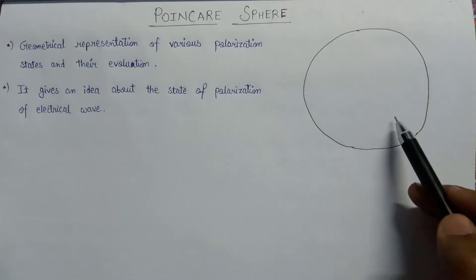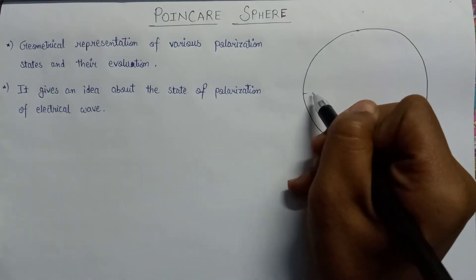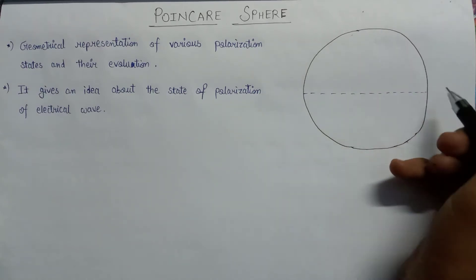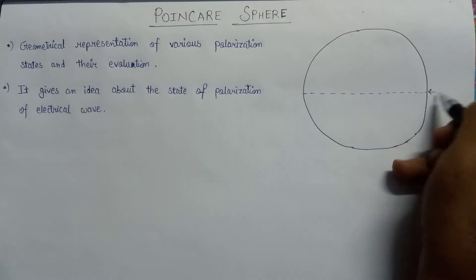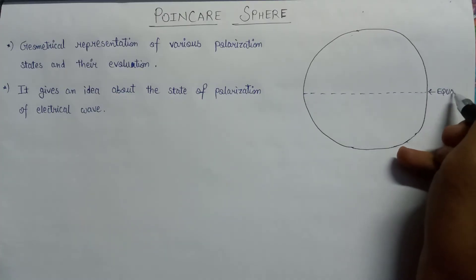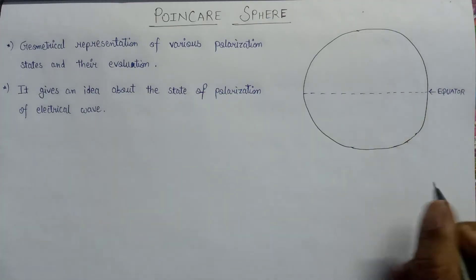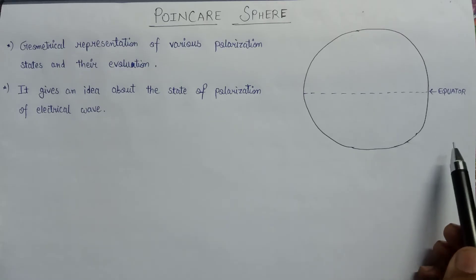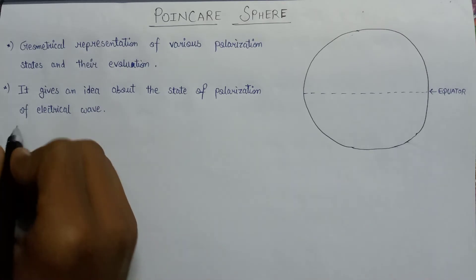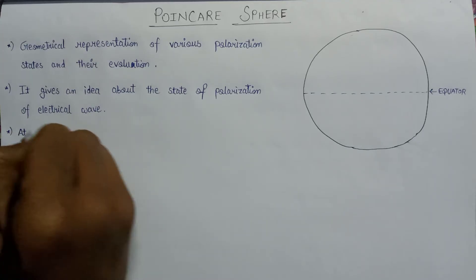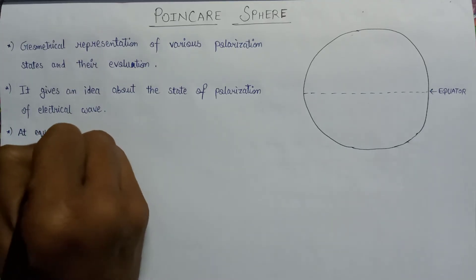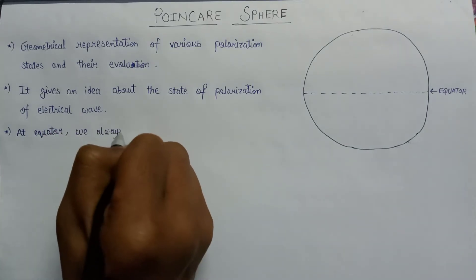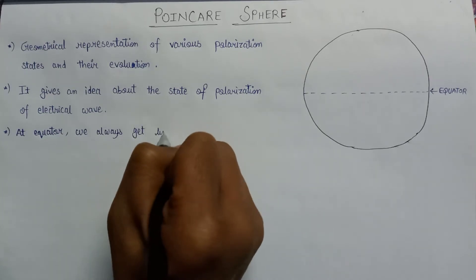Here is a Poincaré Sphere. Let us draw the equator of the Poincaré Sphere. At the equator we will always get a linearly polarized electrical wave.